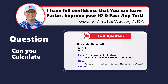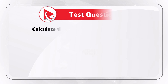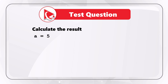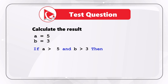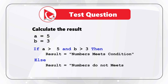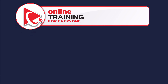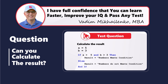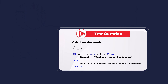Here's an interesting question where you need to calculate the final value of result. You're presented with a subroutine where A equals 5 and B equals 3. Then comes the condition: if A is greater than 5 AND B is greater than 3, then result = "meets condition", else result = "does not meet condition". Take a close look to see if you can calculate the final value of result. I am moving forward to share my version of the answer; if you have a better way to solve it, please post in comments.